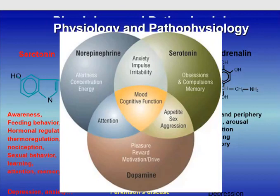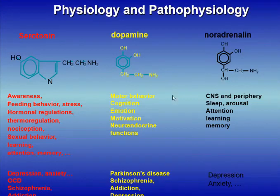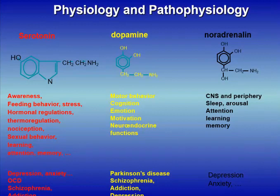This does not mean that serotonin induces those diseases, but at least we can act on the serotonergic system to modify these diseases, sometimes appropriately. Dopamine is more known for its implication in motor behavior, cognition, emotion, motivation, and neuroendocrine function. It is targeted in Parkinson's disease, schizophrenia, addiction, depression, obsessive-compulsive disorder, impulsivity, and probably also feeding behavior.